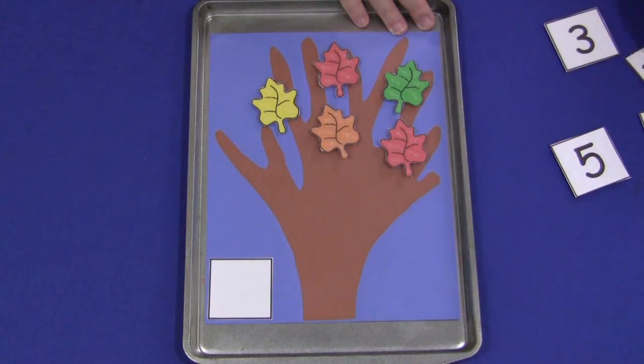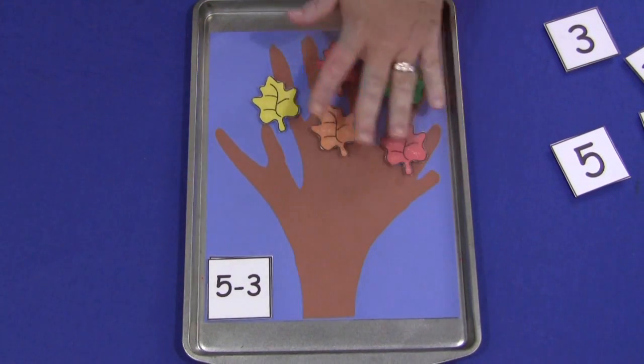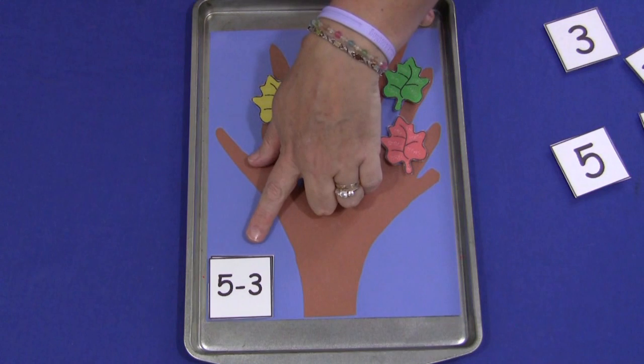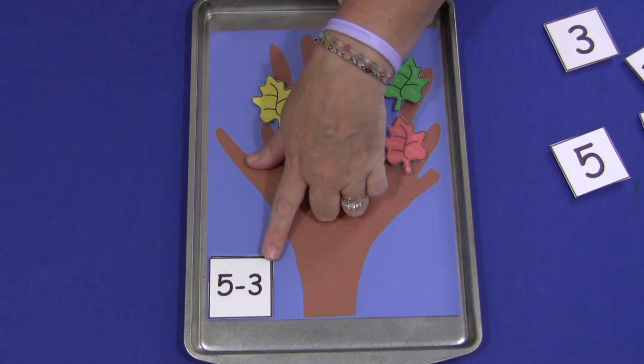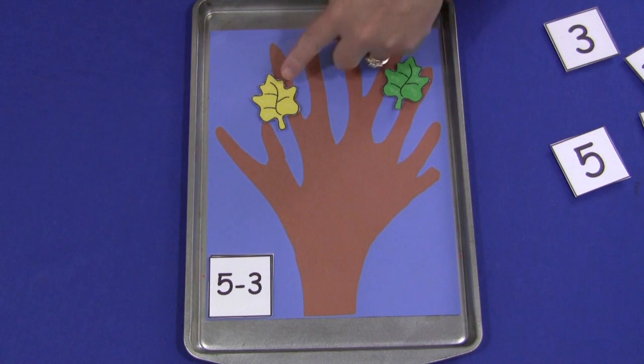For the subtraction, the child would always put down the first number. The amount of the first number says, this is five. We have five leaves here, and then they would remove the second number, which is three. We take away three leaves and that would leave two.